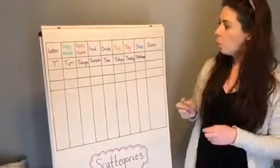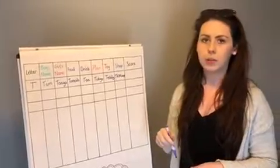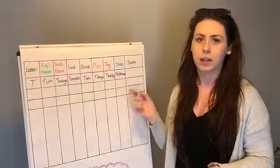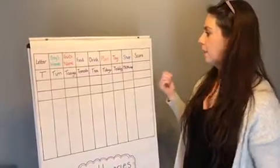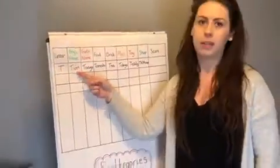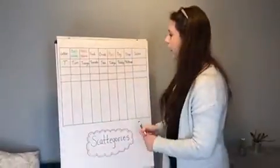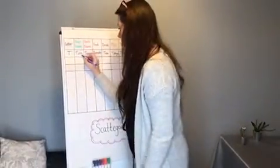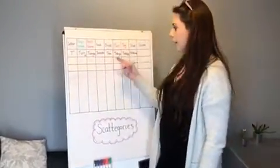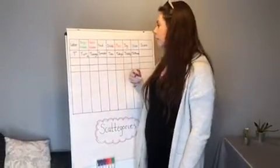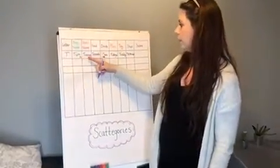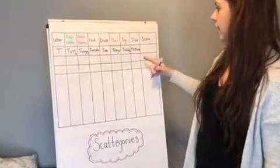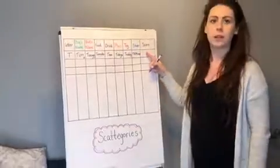Okay, so once the time has stopped, or you could just do it until everyone's finished writing something in here, you compare. So if, say for example, my partner had also written Tim as the boy's name, neither of us would get a point, so I'd put a little zero in here. I don't get anything for that. But maybe I got the name Tanya and my partner got the name Tilly. We'd both get one point for that, so I'd put a little one there. And you continue putting a zero or a one in each of your columns, and then you add them up, and that's where the score goes here.